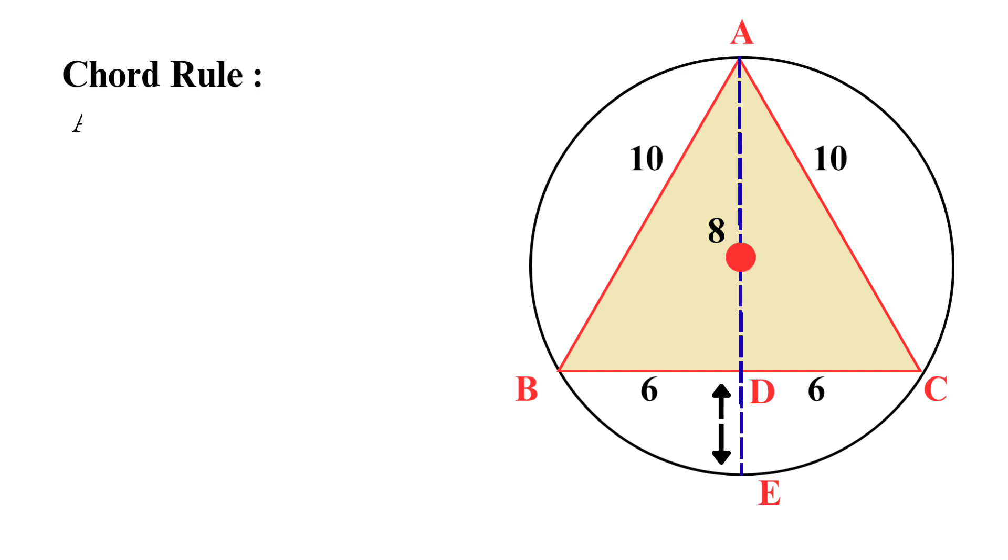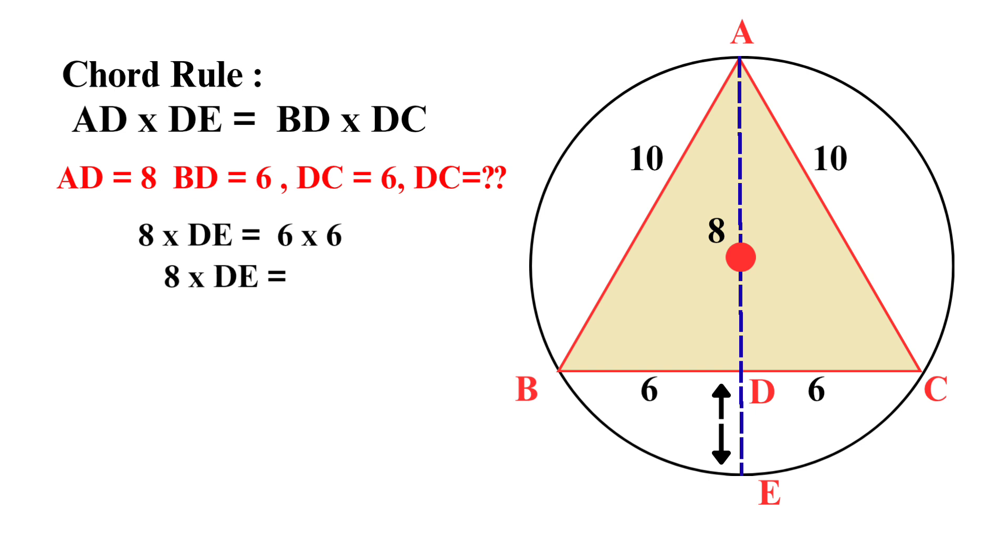So, according to the chord rule, we can write AD multiplies DE equal BD multiplies DC. From the figure, AD equal 8, BD equal 6, DC equal 6, while DE is unknown. And we are going to find it. By substituting the values, we get 8 multiplied DE equal 6 multiplied 6. 8 multiplied DE equal 36. Divide 8 both sides, we get DE equal 36 divided by 8. So the value of DE is 36 over 8.